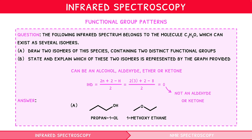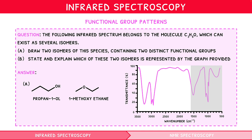For Part B, we can see on the graph there is a trough between 3000 and 3500 cm⁻¹, with an associated trough centred around 3000 cm⁻¹, indicating a hydroxyl and alkyl group respectively. Therefore, our alcohol isomer would be the correct one. However, we could still propose isomers of this alcohol without knowing which specific molecule is responsible — for example, propan-2-ol.